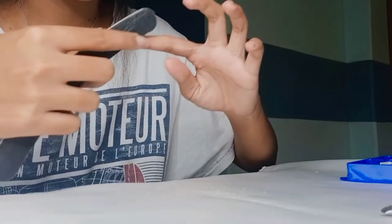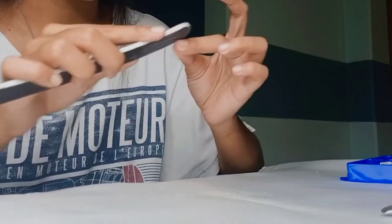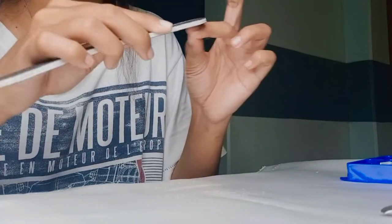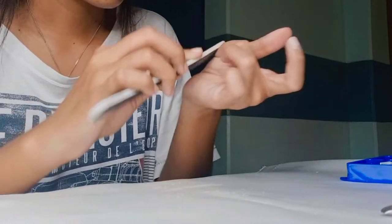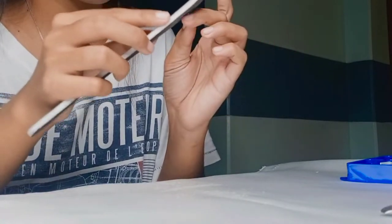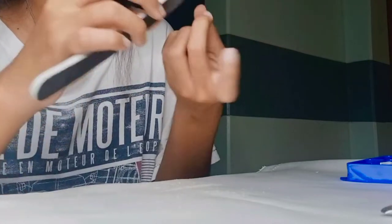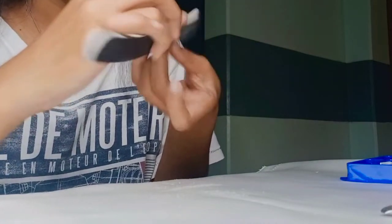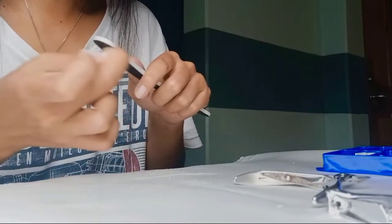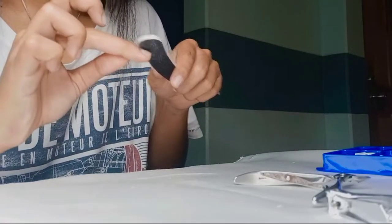And then clean it with a cloth. I use my shirt to clean it because I'm tired. I don't want to get another cloth, so I'll just use my shirt instead. This technique is also to remove some of the excess nail glue.